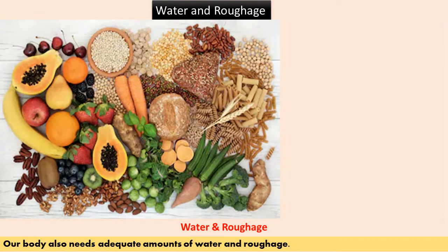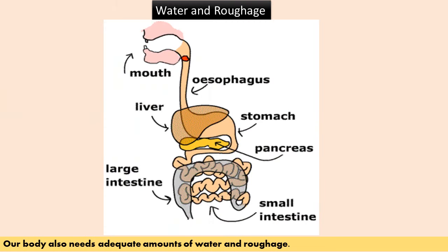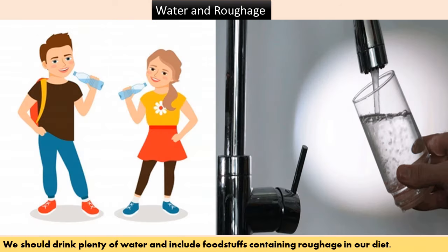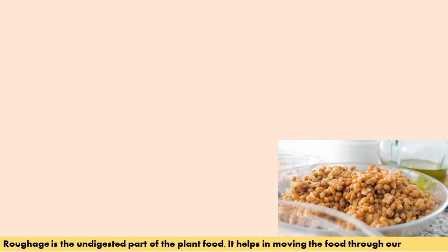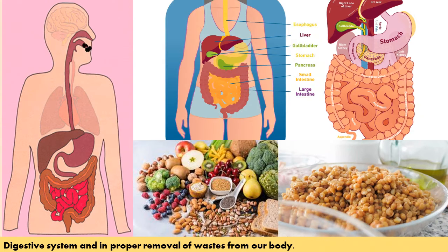Along with the five main components of food, our body also needs adequate amounts of water and roughage. Water acts as the medium for the transport of nutrients inside our body. It also allows food to pass easily through the digestive system. We should drink plenty of water and include foodstuffs containing roughage in our diet. Roughage is the undigested part of plant food. It helps in moving food through our digestive system and in the proper removal of waste from our body.